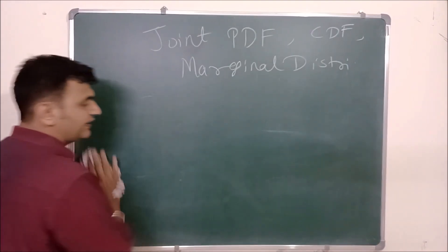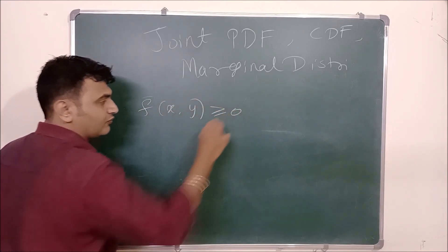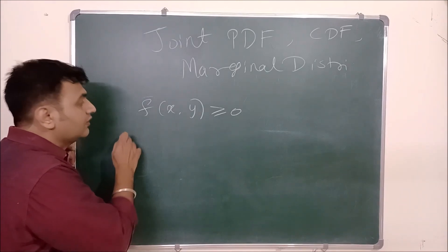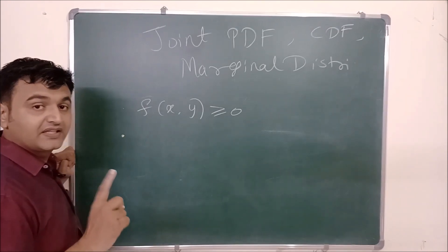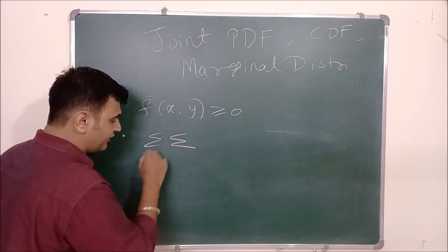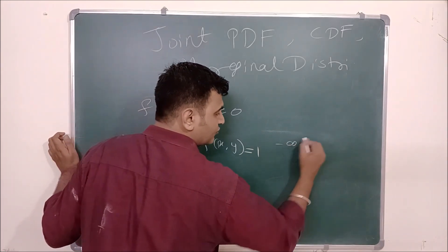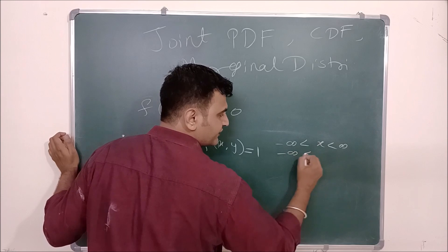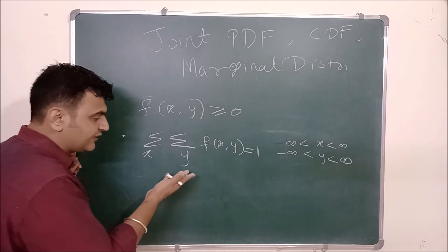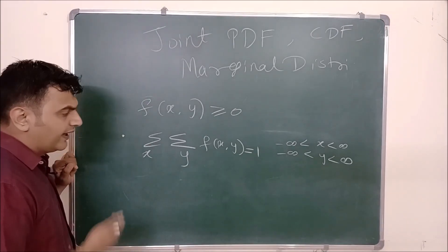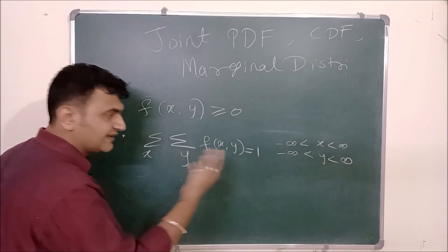The definition goes the same way as before. The first condition is that f(x, y) should be greater than or equal to zero. For two continuous random variables, the second condition: for the joint PMF it was a summation summation of f(x, y) equal to one, varying over all x and y. Here, X goes from minus infinity to infinity and Y goes from minus infinity to infinity. If the range of X is 1 to 10 and range of Y is minus 10 to plus 10, at other points the probability is defined to be zero, which is why we can always write limits from minus infinity to infinity.